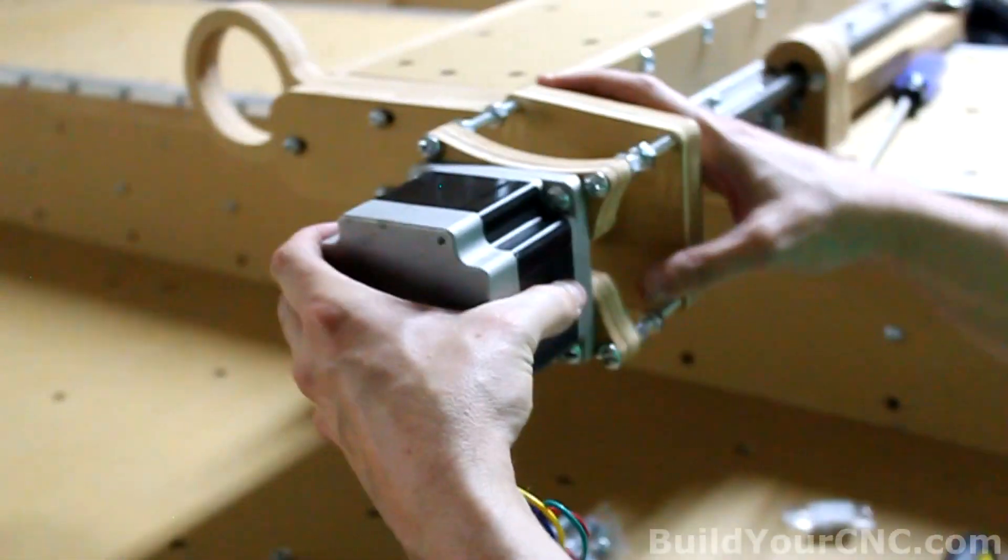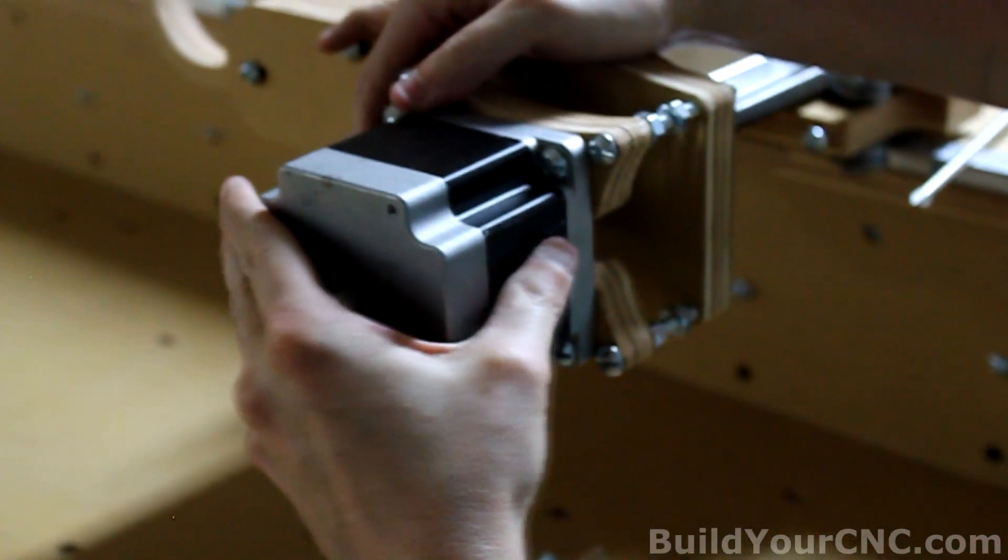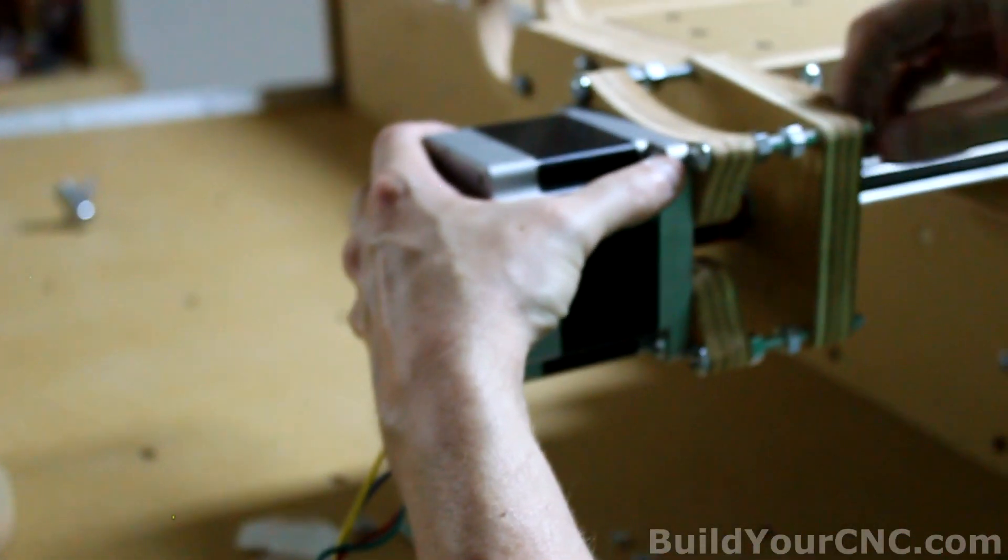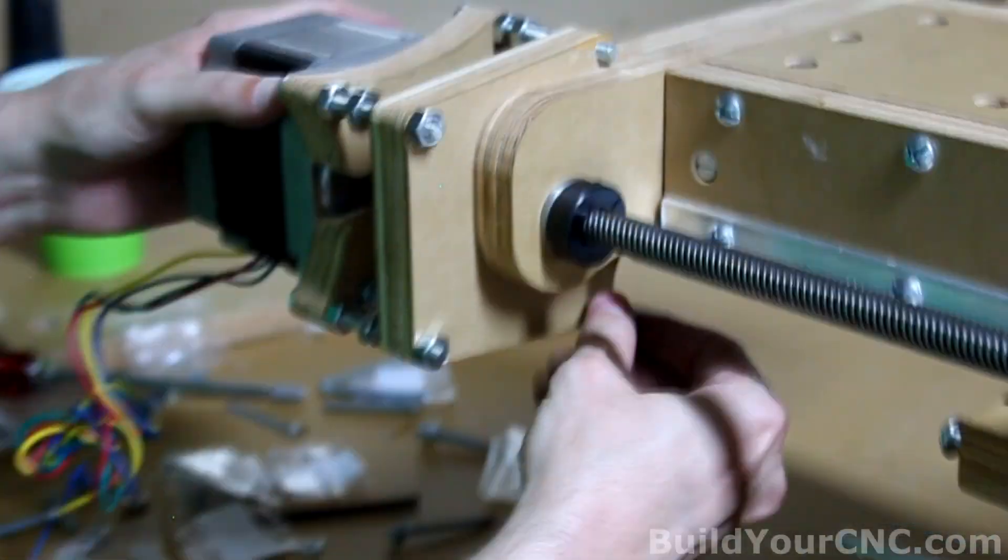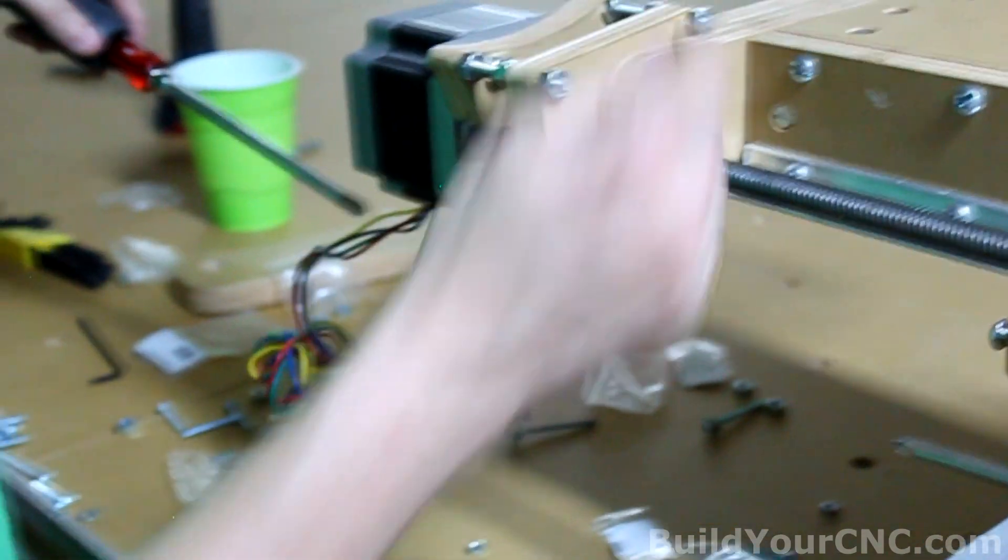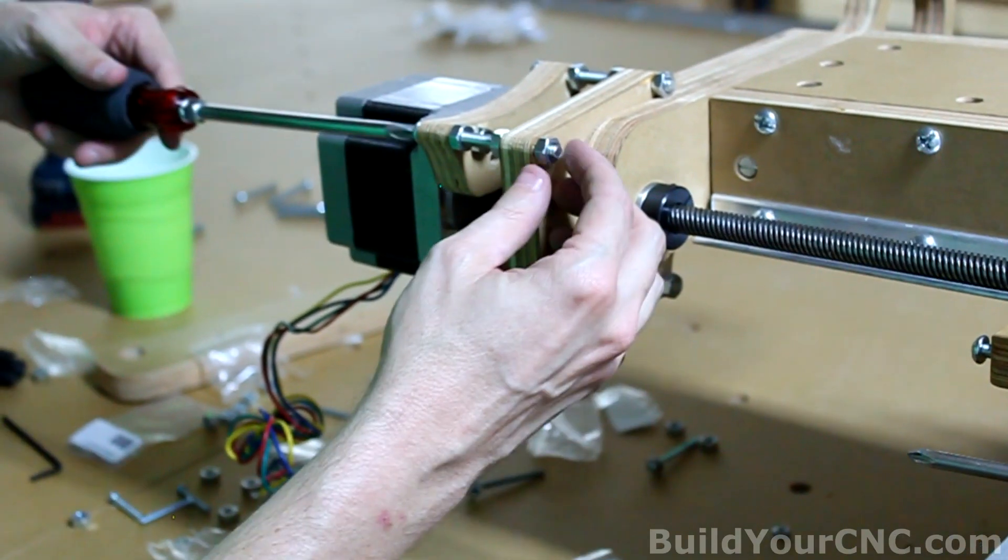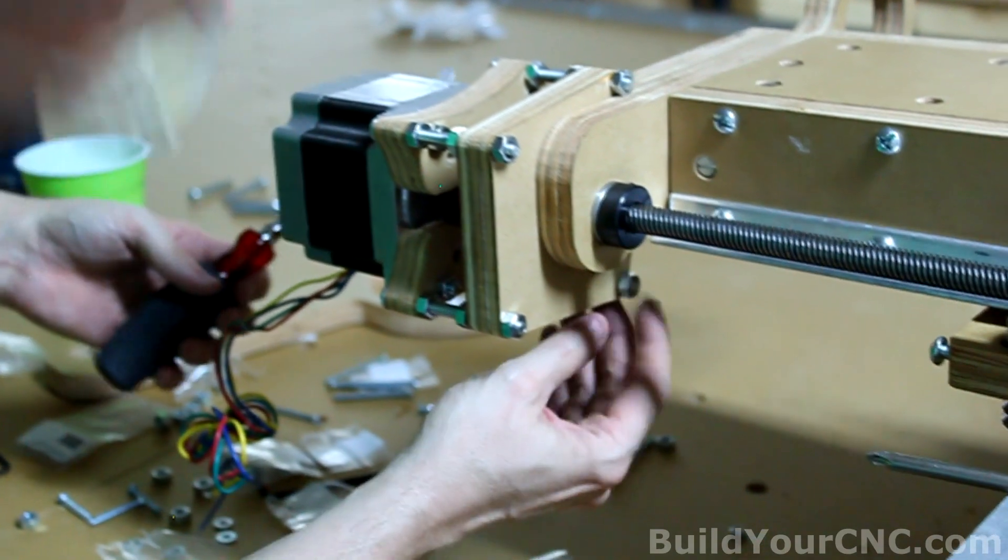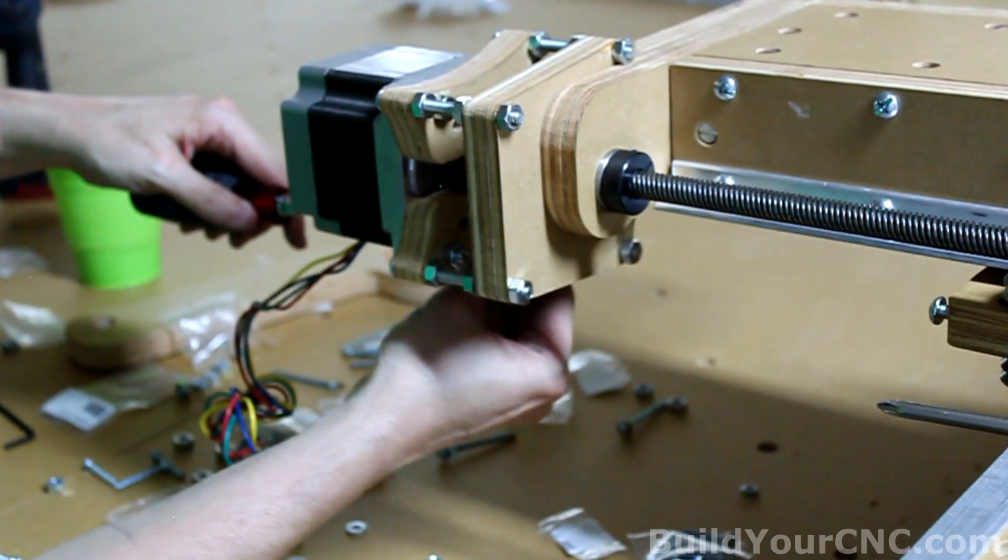It'll go into these four holes. Just go in and then get the motor shaft into the coupling hub and go as far in as you can. Now we'll put in the nuts here. You want to try to get these peeking out of the nut about the same on every screw.